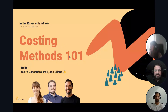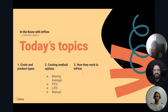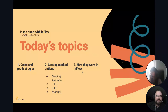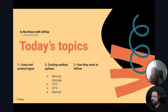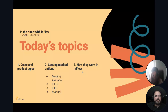I'm going to go ahead and get started. We'll be talking about costing methods. To get started, we'll talk about costs in general and different product types, how they're affected by your costing method, and which costing methods are available in Inflow: moving average, FIFO, LIFO, and manual. And then we'll talk about how they work in Inflow.